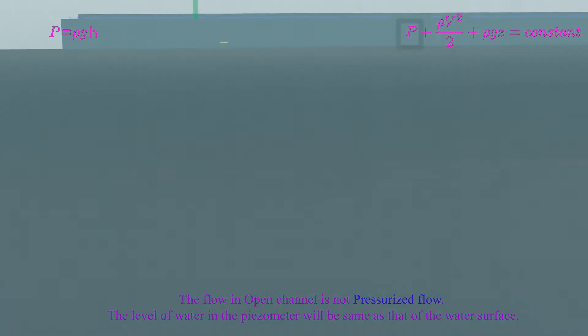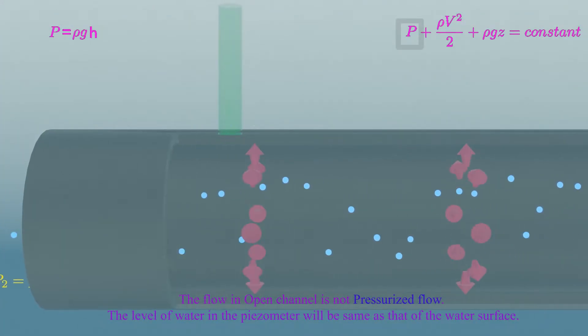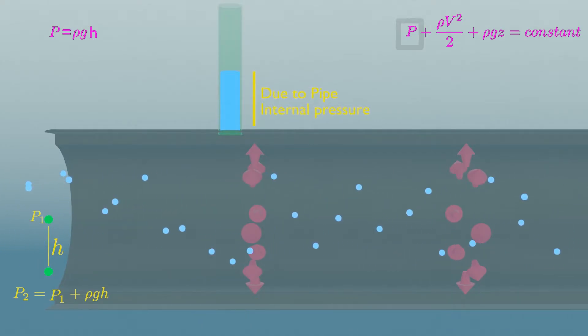But if this piezometer is fitted on pipe, water will rise against gravity, and this height is the pressure created by pressurized water pushing the pipe perpendicular to its surface.